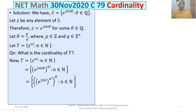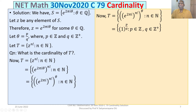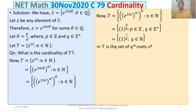This further simplifies to {1^(1/q) : q ∈ ℕ}. That means T consists of the q-th roots of 1, i.e., the q-th roots of unity. So T is the set of q-th roots of unity, and there are exactly q such roots. Therefore, the cardinality of T is equal to q.